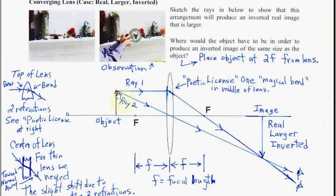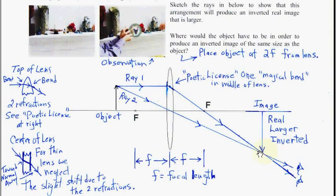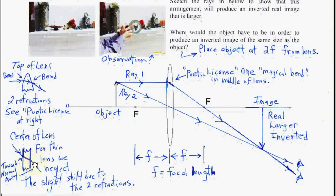We have two rays — ray 1 and ray 2. Ray 3 would be ray 1 backwards: ray 1 is parallel and then through F, so backwards would be through F and then out parallel, giving the same result. At the center of the lens, there's refraction toward the normal and then away from the normal — a little bit of a shift. But for a thin lens, this shift is basically negligible, so we can say that light passes straight through it.